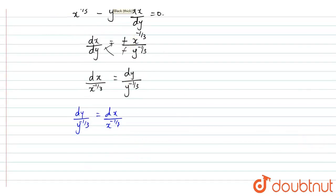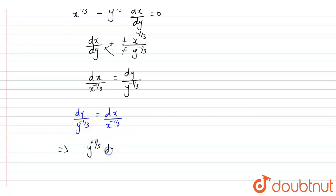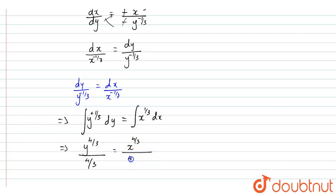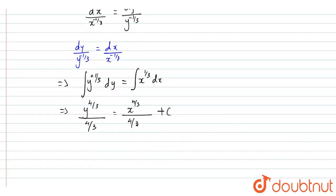Now I'm going to integrate both sides. So we get the integral of y^(1/3) dy equal to the integral of x^(1/3) dx. After integrating, we get y^(4/3) / (4/3) = x^(4/3) / (4/3) + constant.